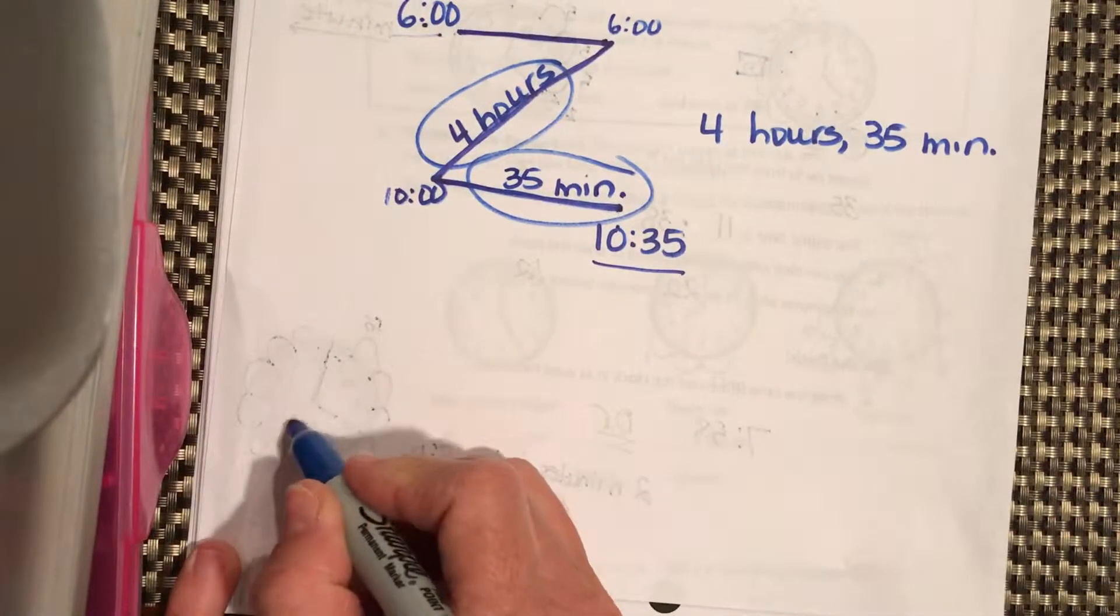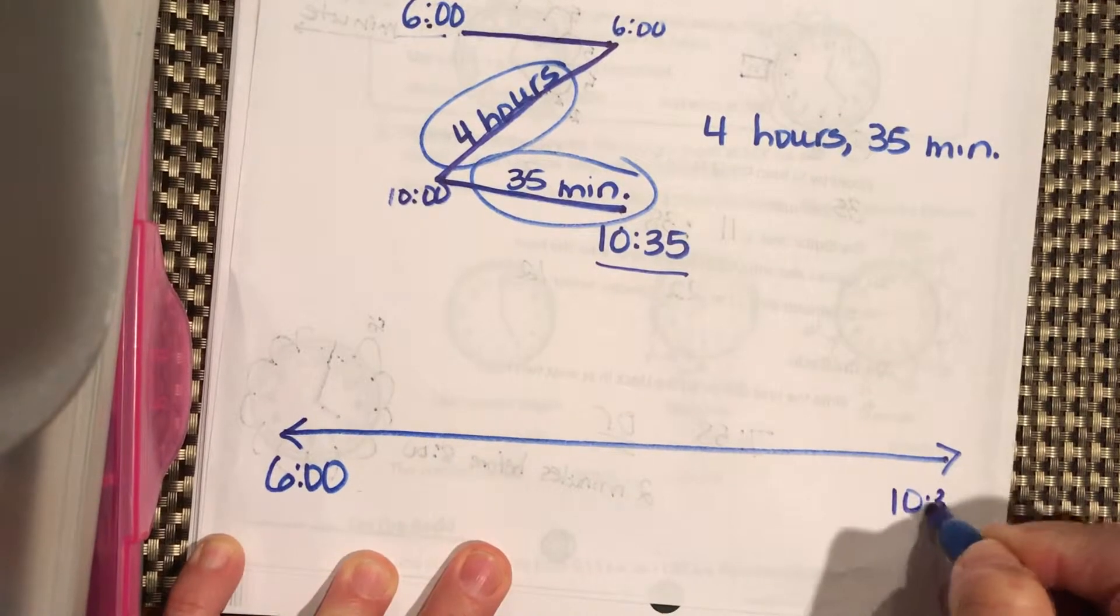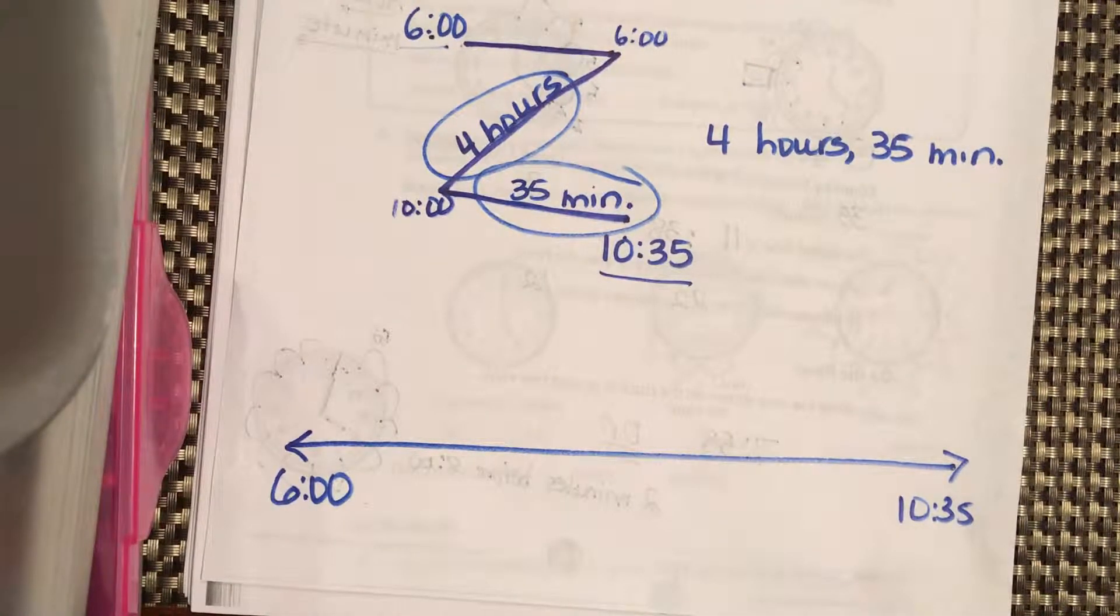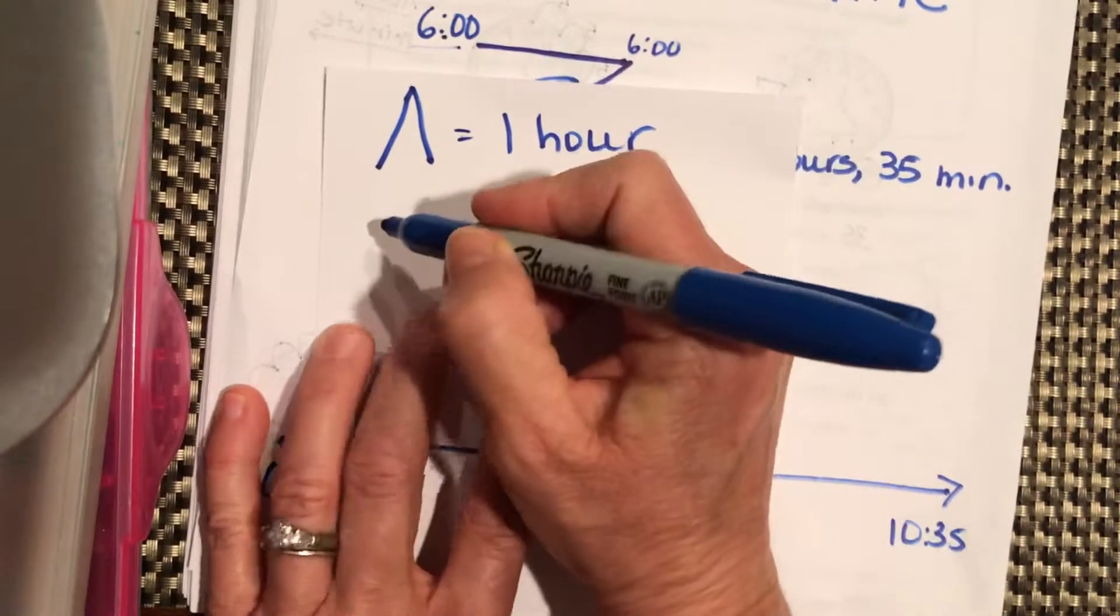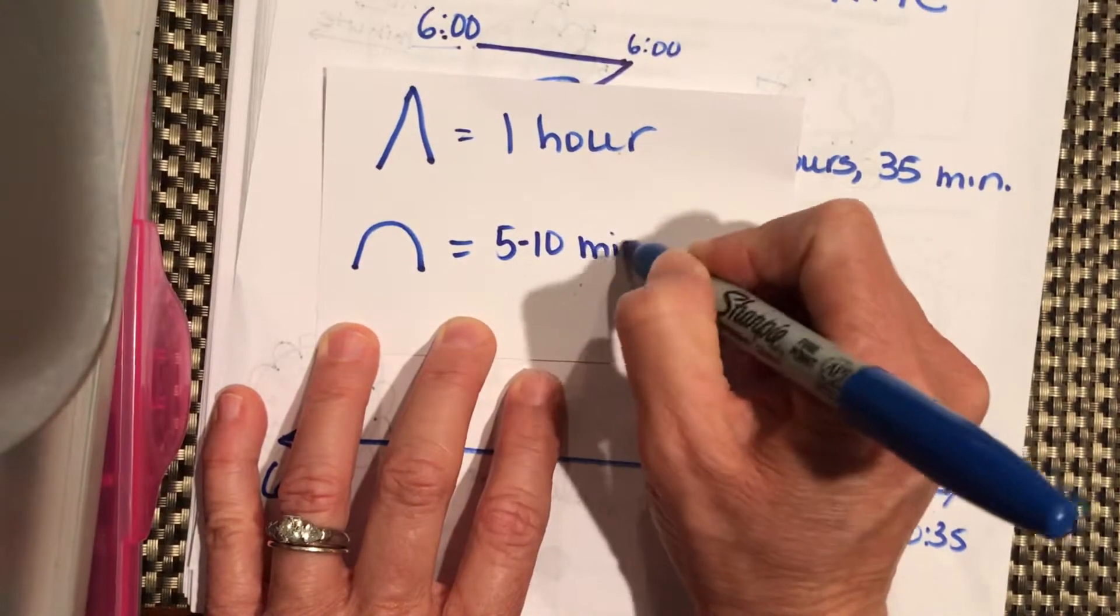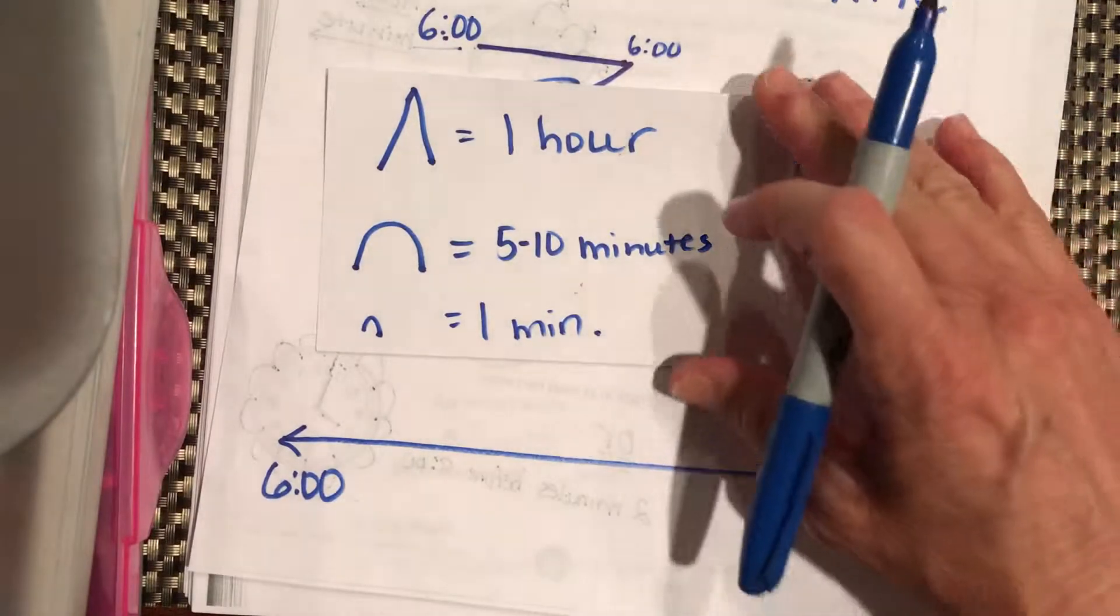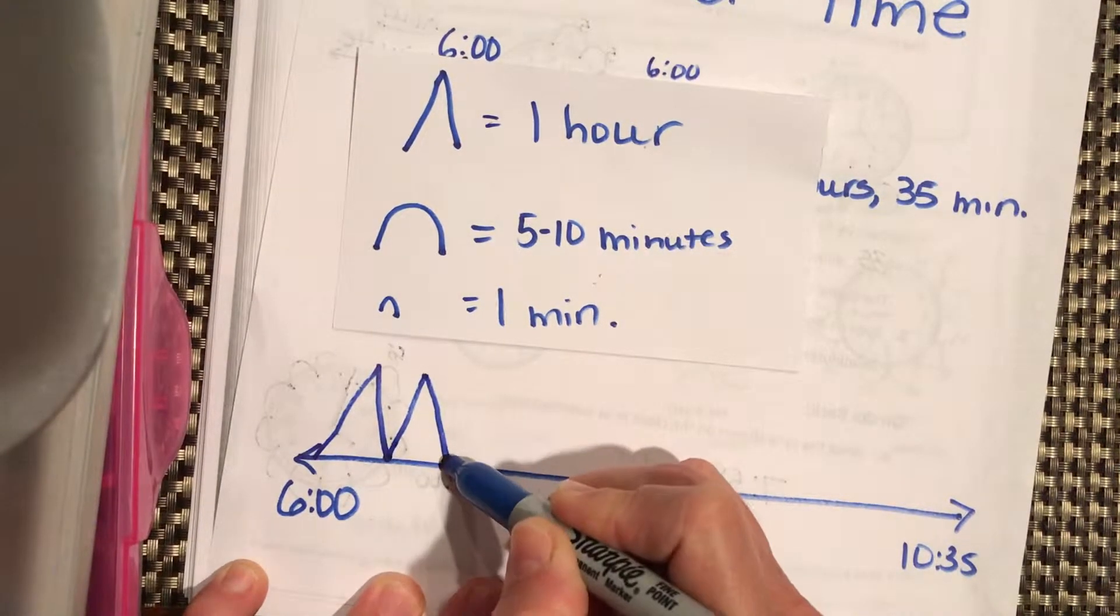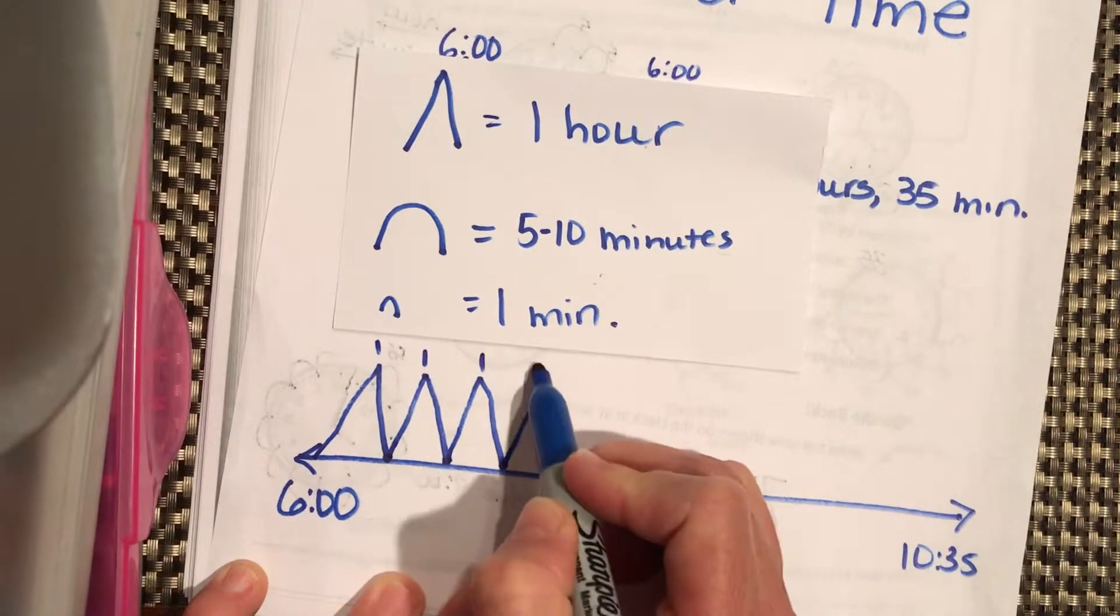Now, the other way to do it is using a number line. We have our start time at 6 o'clock, our end time at 10:35. We have our mountains. Mountain equals 1 hour. Our hill is equal to like 5 or 10 minutes, depending on how many. It's basically chunks of a minute. And then, our rocks are equal to 1 minute each. So, let's see. Let's start by counting our number of hours. So, we have 1 hour, that's 7 o'clock. Another hour, that's 8 o'clock. Another hour, 9 o'clock. Another hour, 10 o'clock. So, 1, 2, 3, 4, right? So we have 4 hours there.